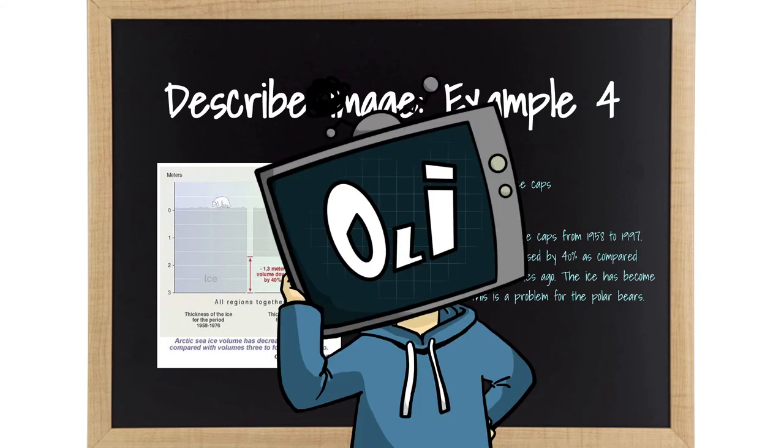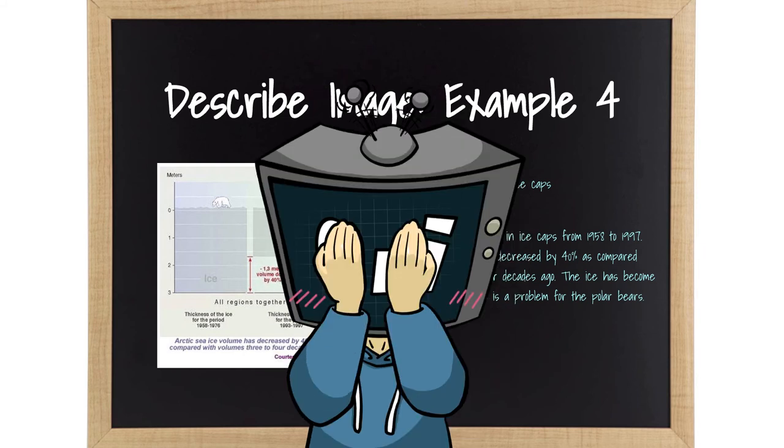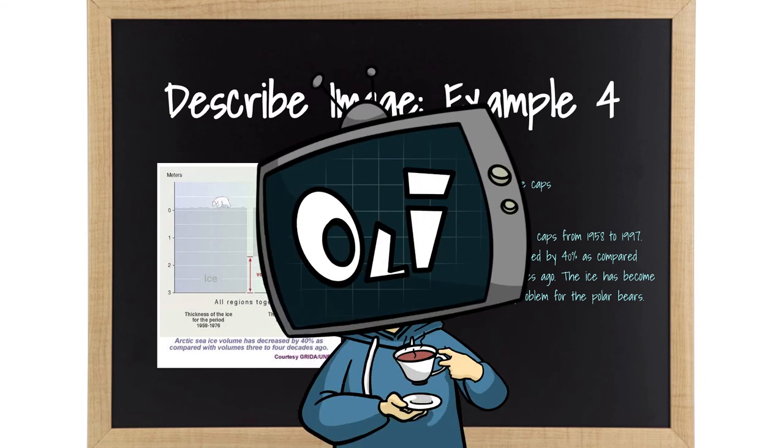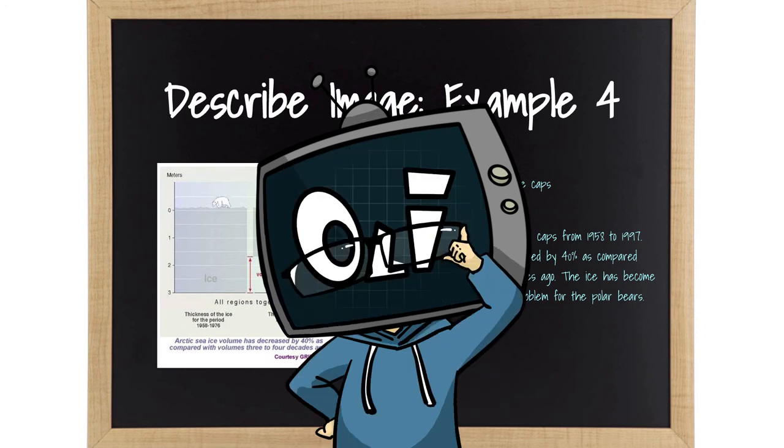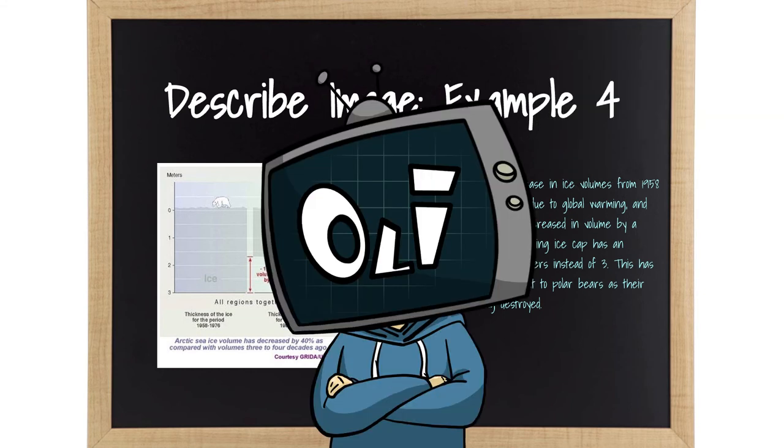Can I not give a complex version for this question? Like, what's the point? It wouldn't be any different in terms of content anyway, just how I show off my vocabulary and manipulation of sentence structures. Fine, I will do it because I'm a very nice Aquarius. Here it is. This picture illustrates the decrease in ice volumes from 1958 to 1997. The ice cap is thinning due to global warming, and in just 3 to 4 decades, the ice decreased in volume by a whopping 40%. The remaining ice cap has an average thickness of about 1.8 meters instead of 3. This has become the most significant threat to polar bears, as their natural habitats are being destroyed. There, I mention the polar bears again even though it's probably not necessary. You happy?